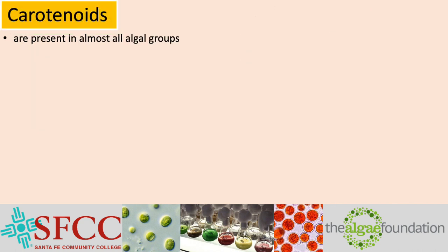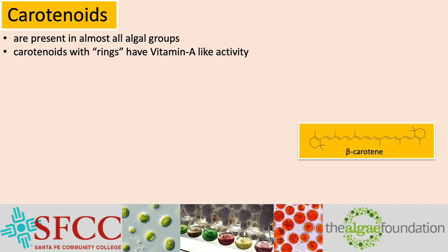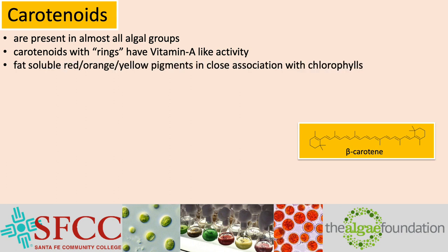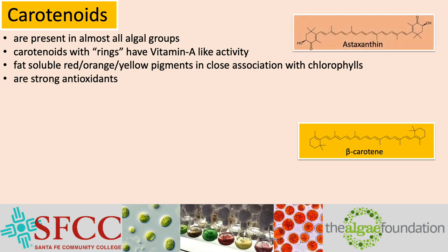Carotenoids are present in almost all algal groups. Carotenoids with rings at the end of the carbon chains have vitamin A-like activity, and the carotenoid beta-carotene is the source of vitamin A in your supplements. These are the fat-soluble red, orange, and yellow pigments closely associated with the chlorophylls in the photosynthetic apparatus. They are also very strong antioxidants and function to protect the chlorophylls from damage under high light, called photodamage.